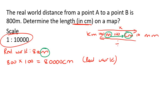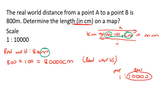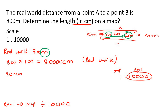The scale is 1 to 10,000 — so 10,000 is the real world and 1 is the map. To go from the real world to the map, you divide by 10,000. So we take 80,000 and divide it by 10,000, and that gives us 8 centimeters.